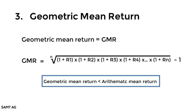Number 3: geometric mean return. In comparison to the arithmetic mean, it is compounded annually. A key difference between the arithmetic and geometric mean return is that when the periodic rates of return vary, the geometric mean return will be less than the arithmetic mean return.